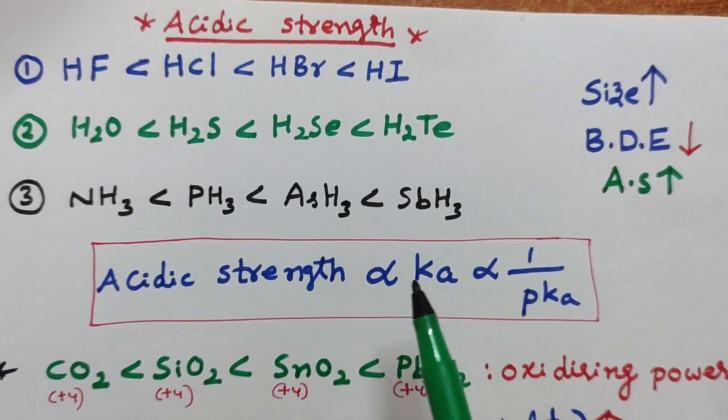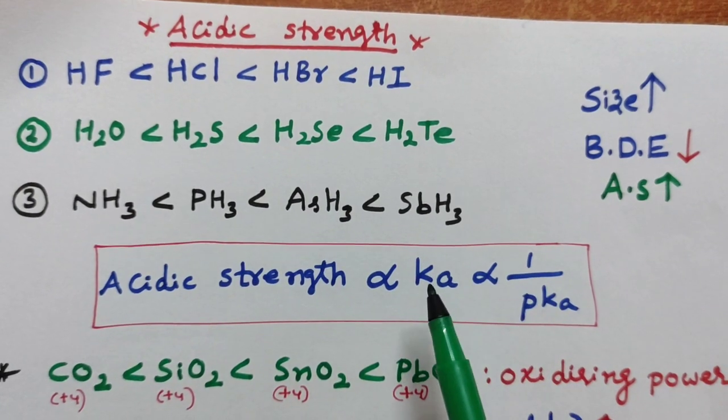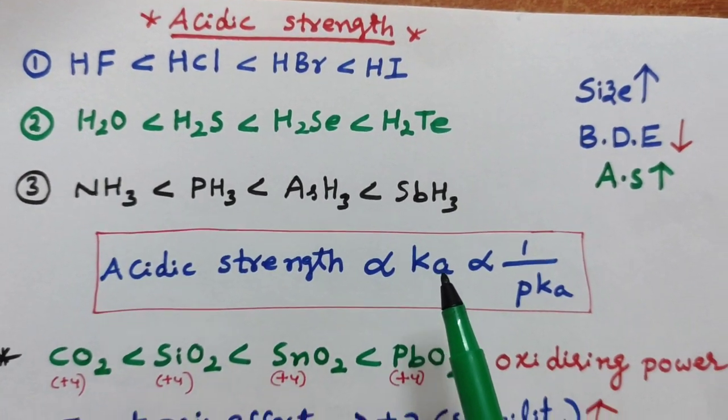Next, acidic strength is inversely proportional to pKa, directly proportional to Ka.